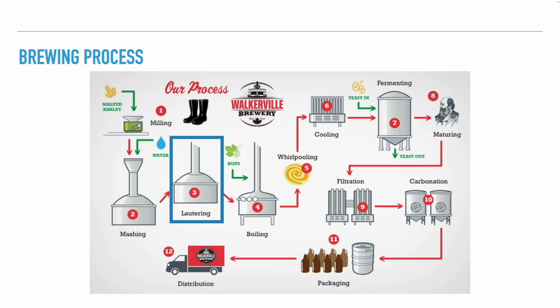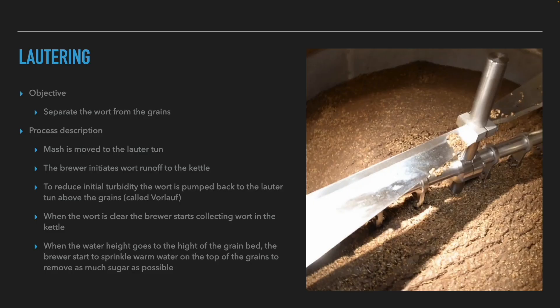The next step is to separate the sweet liquid from the grains — this is called lautering, after the German word. The objective of the lauter step is to separate the wort, which is the sweet liquid, from the grains. The process works by moving the mash to the lauter tun, which is a vessel with a perforated false bottom that allows the liquid to drain while keeping the grains behind.